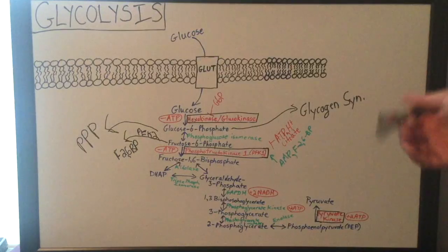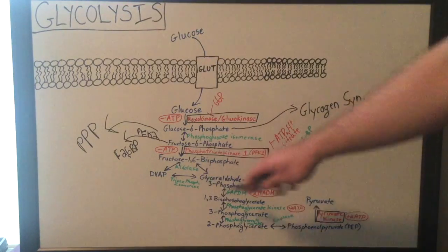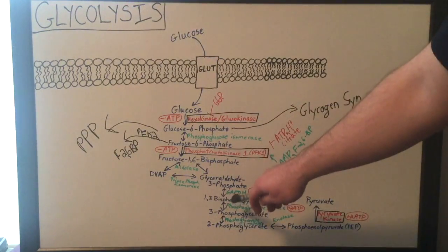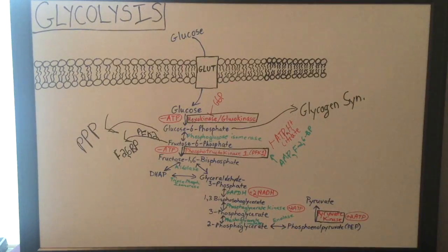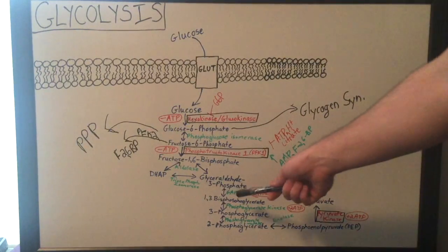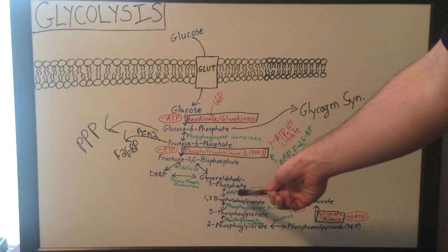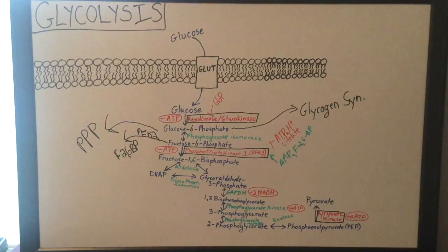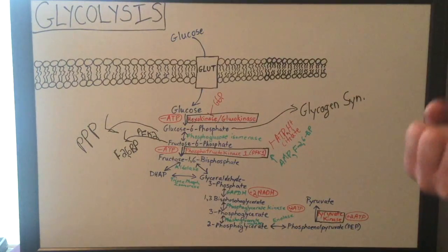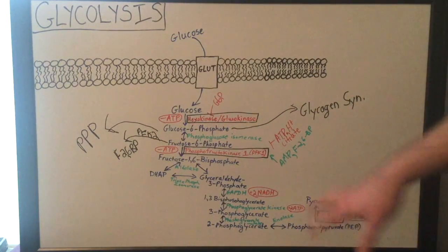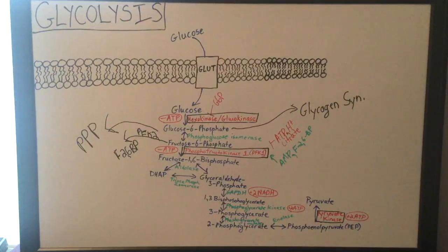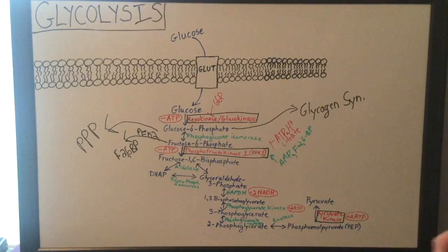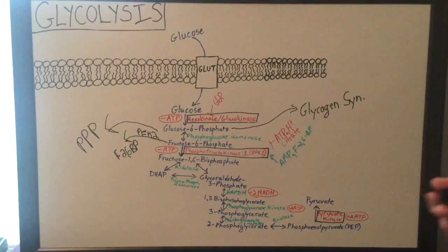Once that's happened, glyceraldehyde 3-phosphate will actually be converted into 1,3-bisphosphoglycerate by GAPDH (glyceraldehyde phosphate dehydrogenase), and this actually garners 2 NADH for the cell. NADH can be used in the TCA cycle or in lactate production depending on whether there's oxygen present for the cell.